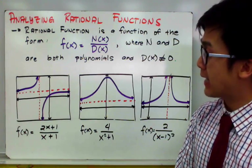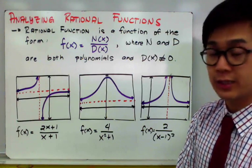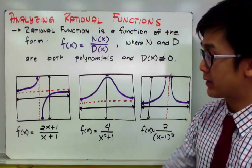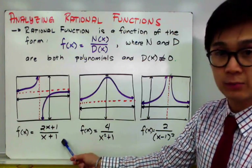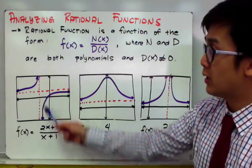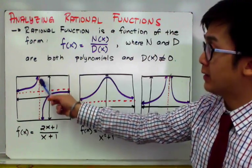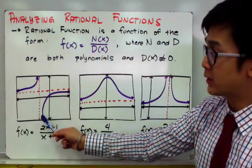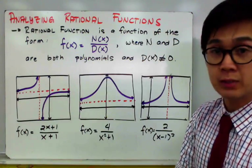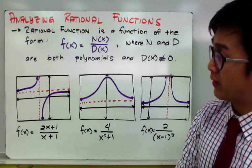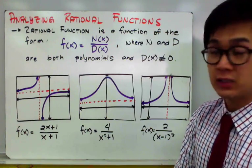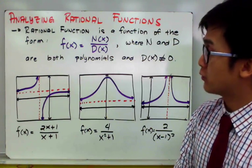Here are some examples of a rational function and its graph. For the first example, we have f of x is equal to 2x plus 1 all over x plus 1. You will notice that in this graph of a rational function, we have a vertical asymptote and a horizontal asymptote represented by the two broken red lines. That's one unique feature of a rational function.